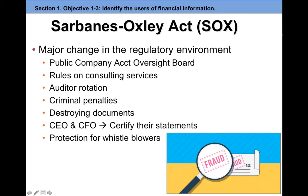Under SOX, there are rules on consulting services: if you hire a CPA firm to audit your books, you cannot hire the same firm to consult and design your accounting system. That's exactly what happened with Enron — they hired Arthur Andersen, paid them to set up a fraudulent accounting system, then paid them again to audit the financial reports produced using that system. SOX also requires auditor rotation every three to five years, criminal penalties for fraud and destroying documents, CEO and CFO sign-off on financial statements, and protection for whistleblowing employees.